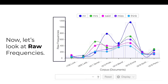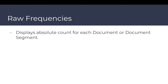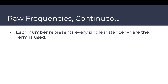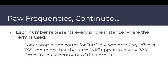Now let's look at raw frequencies. Raw frequencies display the absolute count for each document or document segment, showing numerical values in whole numbers. Each number represents every single instance where the term is used. For example, the count for 'Mr.' in Pride and Prejudice is 785, meaning the term 'Mr.' appears exactly 785 times in that document of the corpus.